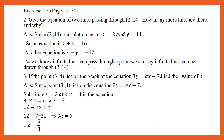Let us start with Exercise 4.3, page number 74, question number 2. Give the equation of two lines passing through (2, 14). How many more lines are there and why? Since (2, 14) is a solution, that means x is equal to 2 and y is equal to 14. So we can frame equations like x plus y equal to 16, or x minus y equal to negative 12, or 2x plus y equal to 18. As we know, infinite lines can pass through a point, so infinite lines can be drawn through (2, 14).